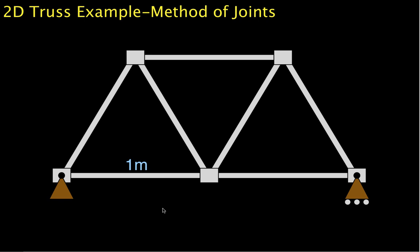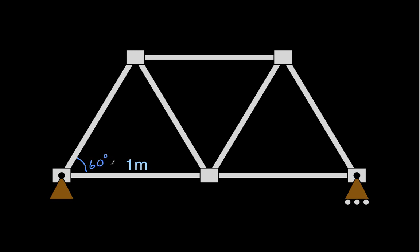The truss that we will solve is right here. It is designed so that it has seven members and five joints. Each member is one meter long, which means that every angle in the truss is 60 degrees, so our truss is made out of equilateral triangles.